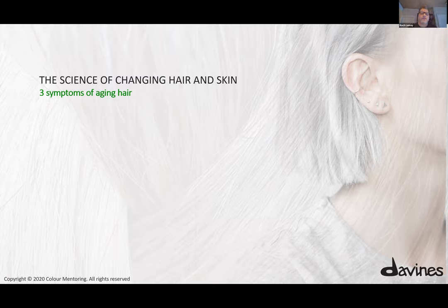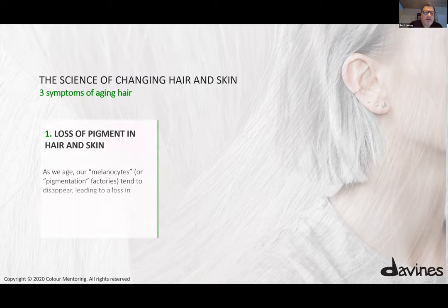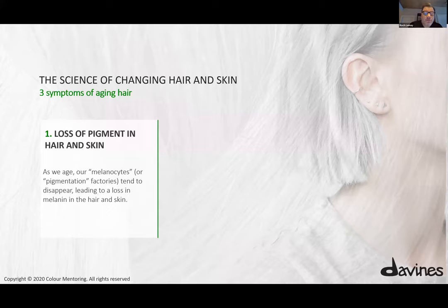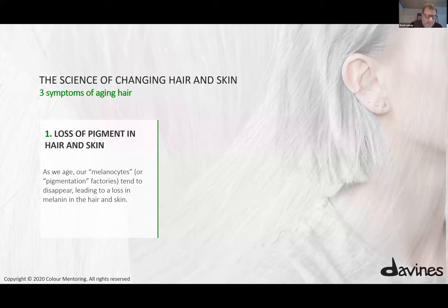Now let's look at touch and feel the hair — the science of changing hair and skin. Why is it important to understand the three symptoms of aging? First: loss of pigment. With age, the melanocyte — the gland that produces melanin into the hair and skin — gets lazy with time. Eventually it stops producing melanin, which is why we get white hair. We also lose complexion in our skin, a little bit less pigment at a time, caused by the laziness of the melanocyte.